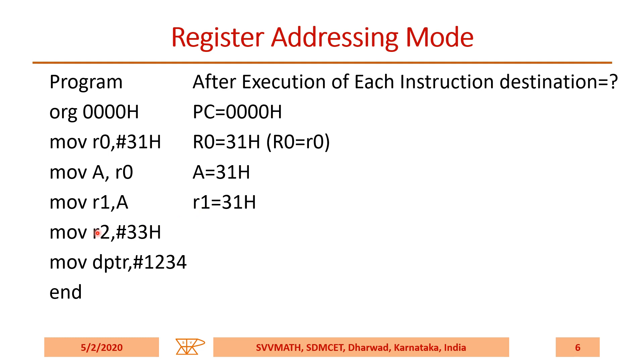When I execute MOV R2, #33H, 33H will be moved to the R2 register. Similarly, when I say MOV DPTR, #1234H, DPTR will become 1234H.